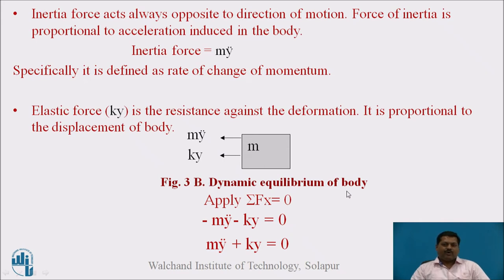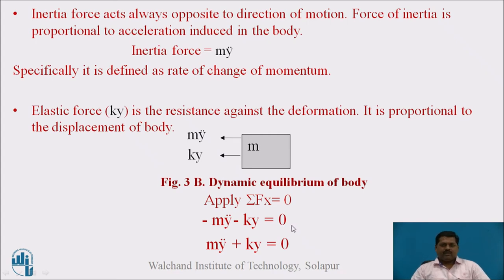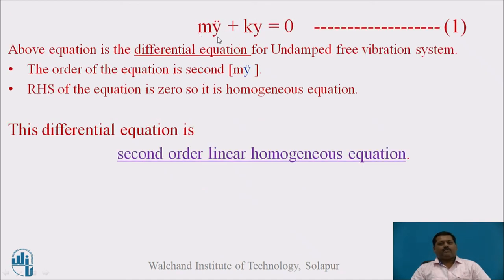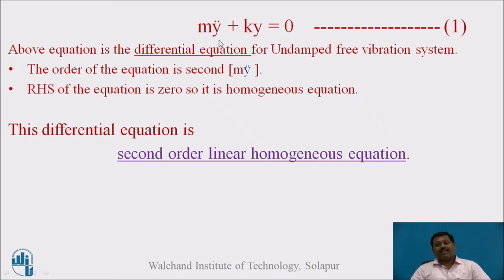For dynamic equilibrium of the body as shown in figure 3b, inertia force m·ÿ and elastic force k·y are both marked. Applying summation of forces equal to zero: both forces act towards the left, giving −m·ÿ − k·y = 0, which rearranges to m·ÿ + k·y = 0. This is the differential equation for the undamped free vibration system, and also the mathematical model of the single story building idealized as a single degree of freedom system.